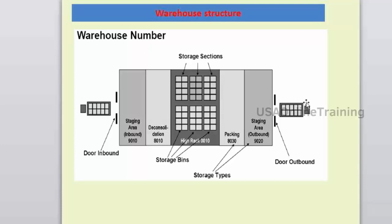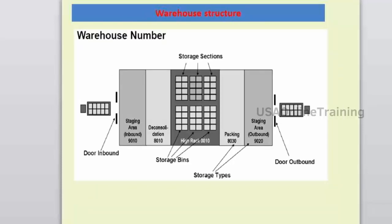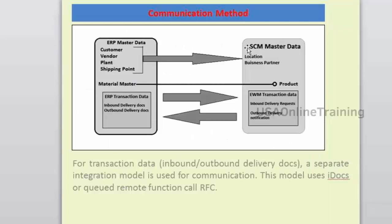Now, what are the deployment options available in EWM? Multiple ERPs can be connected to the SCM server, and EWM is part of that SCM server. The deployment options show how you can connect ERP into the EWM standalone system. Working with EWM, there are two boxes: the ECC box and the EWM box. These two systems are connected with each other.